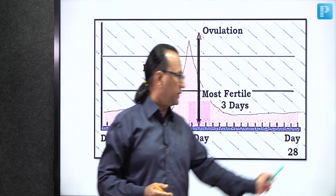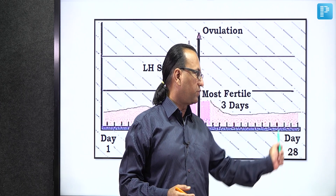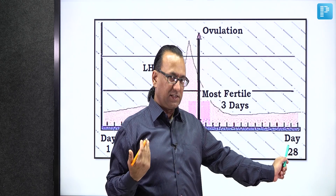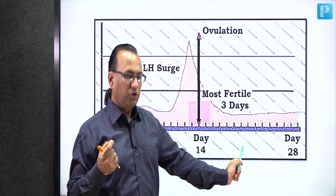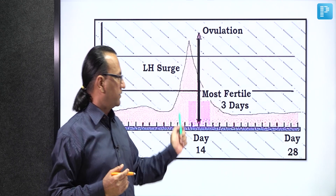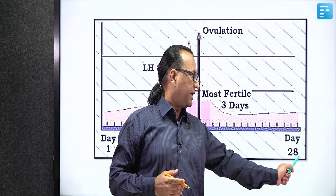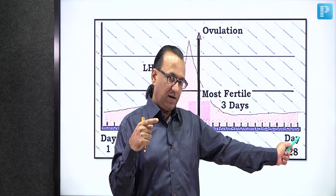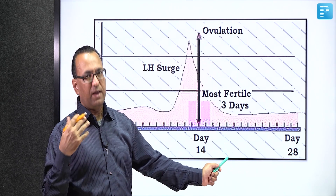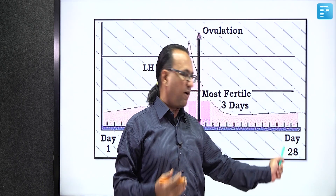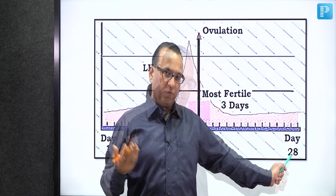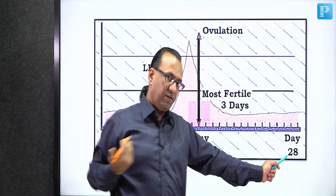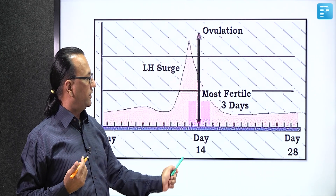Some ladies may have a longer menstrual cycle of up to 35 days, and others a shorter one of as few as 21 days. But it is seen that ovulation occurs about 14 days before the last day of the cycle. So if it is a 35-day cycle, subtract 14 — that is the day of ovulation. Similarly, for a 21-day cycle, subtract 14 to find the day of ovulation.